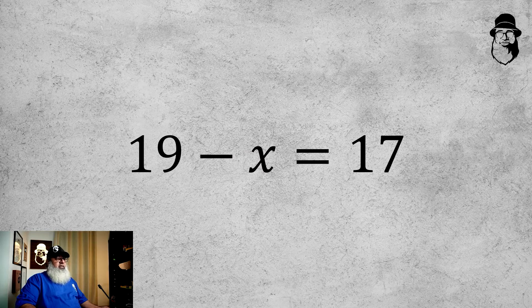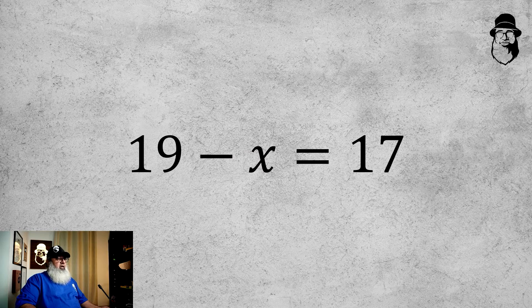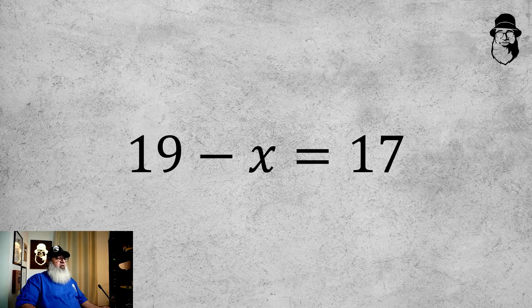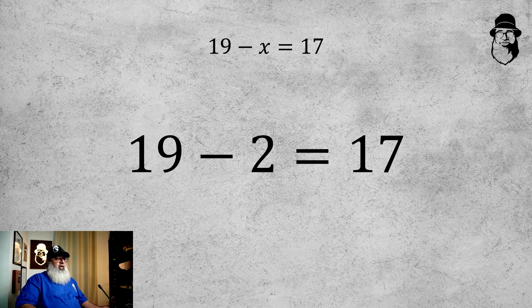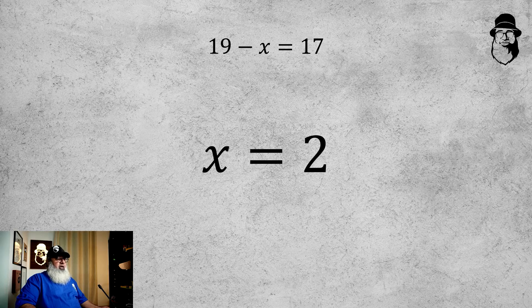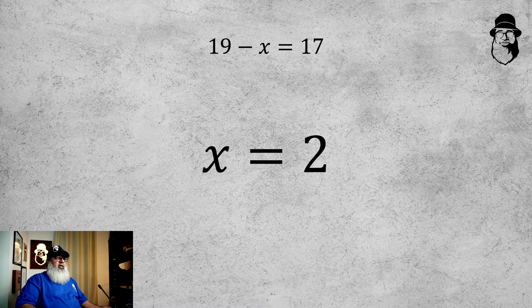Similarly, if we have 19 minus X equals 17, then we can see that because 19 minus 2 equals 17, X must be equal to 2, and we write it like this.